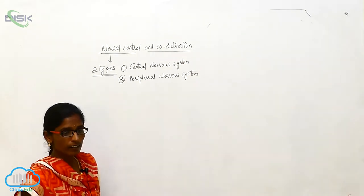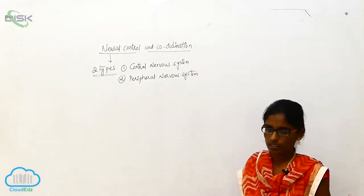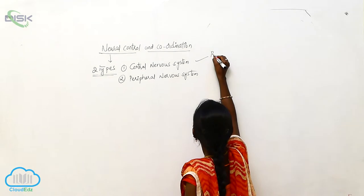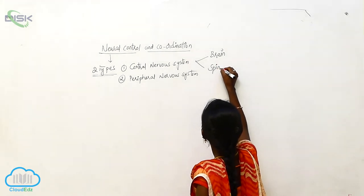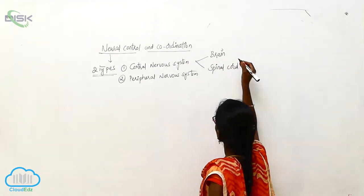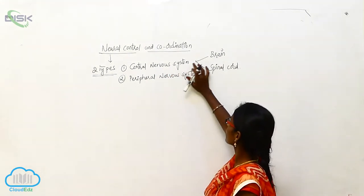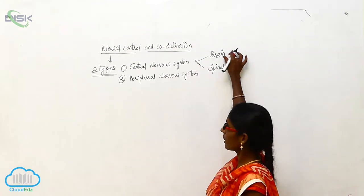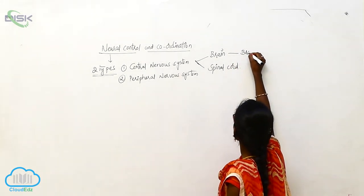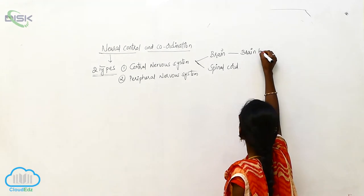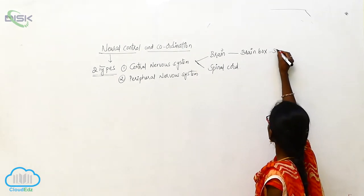The Central Nervous System consists of two parts: the Brain and the Spinal Cord. The Brain is covered by the Brain Box, and it is also covered by three membranes.